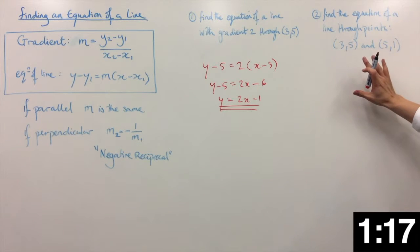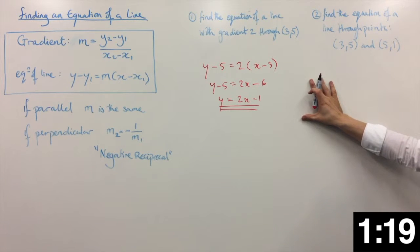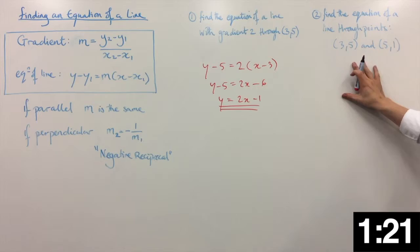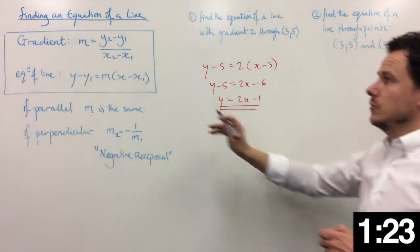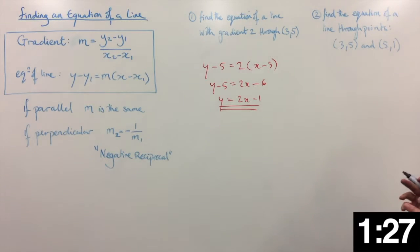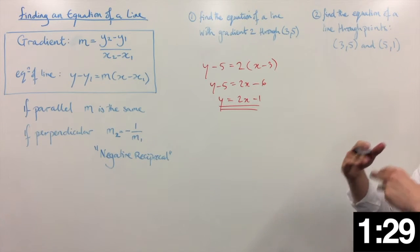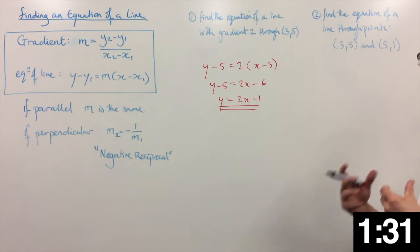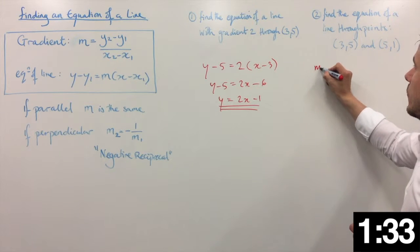Okay, again, it's the same setup really, but we need to find the gradient first. Now you could substitute this right into this and work it all out. Totally fine. I'm going to break into separate parts so that you can be more sure of what you're doing. So if we find the gradient first.